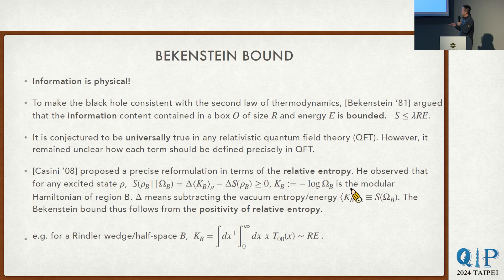A canonical example is that if you consider a half space—what physicists call a Rindler wedge—this modular Hamiltonian admits a local integral form, which is sort of like R times E. Therefore, it is widely accepted as a good proposal for the Bekenstein bound.